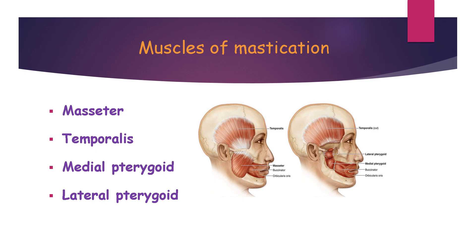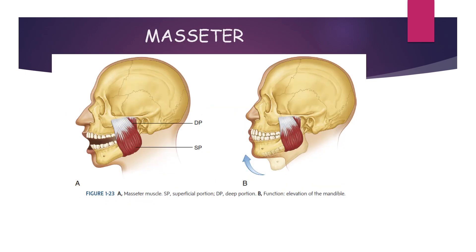The muscles of mastication are masseter, temporalis, medial pterygoid, and lateral pterygoid. The masseter muscle has a superficial and deep portion; its function is elevation of the mandible. The superficial layer of the masseter originates from the zygomatic process of the maxilla and inserts at the angle and lower lateral side of the ramus. The pterygomandibular raphe lies between the buccinator and superior constrictor muscle.